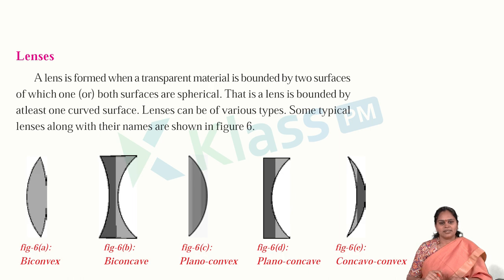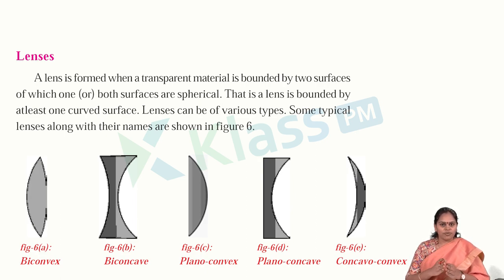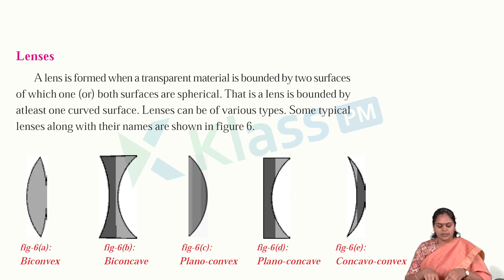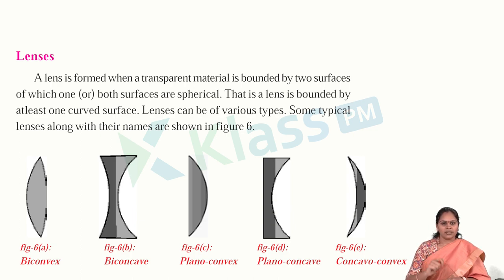What is a lens? A lens is a transparent material bounded by two surfaces, of which one or both surfaces are spherical. A lens is formed when a transparent, see-through material is bounded together with two surfaces where one or both can be spherical. A lens is bounded by at least one curved surface — any see-through material must contain at least one curved surface to be called a lens.